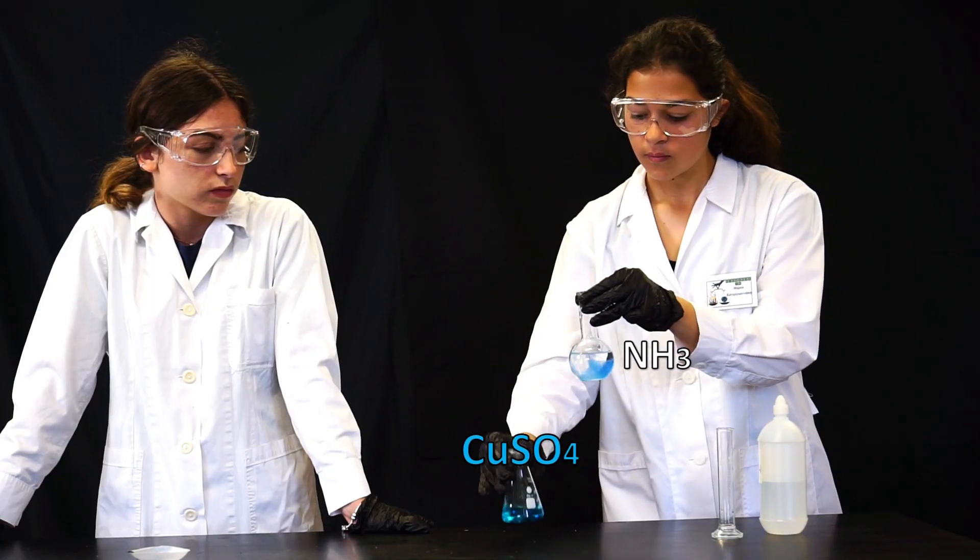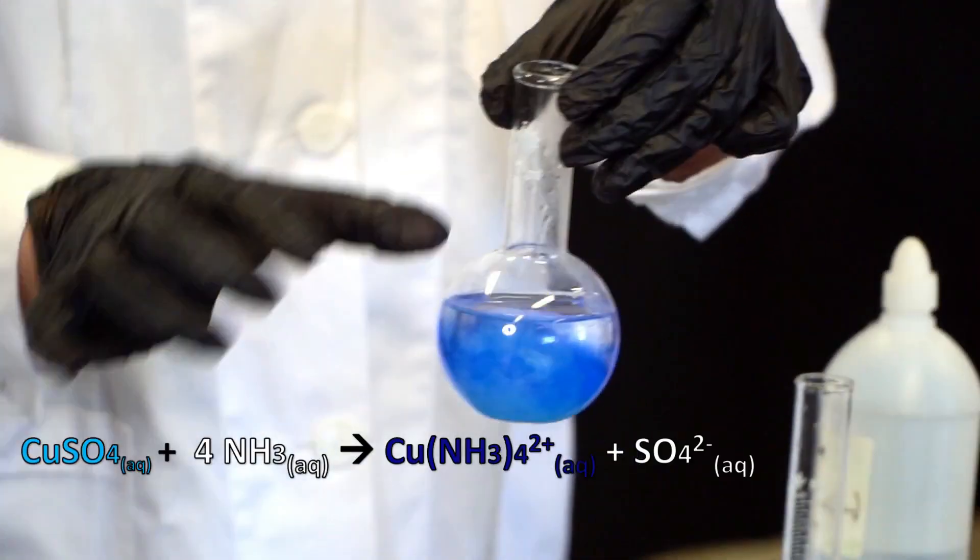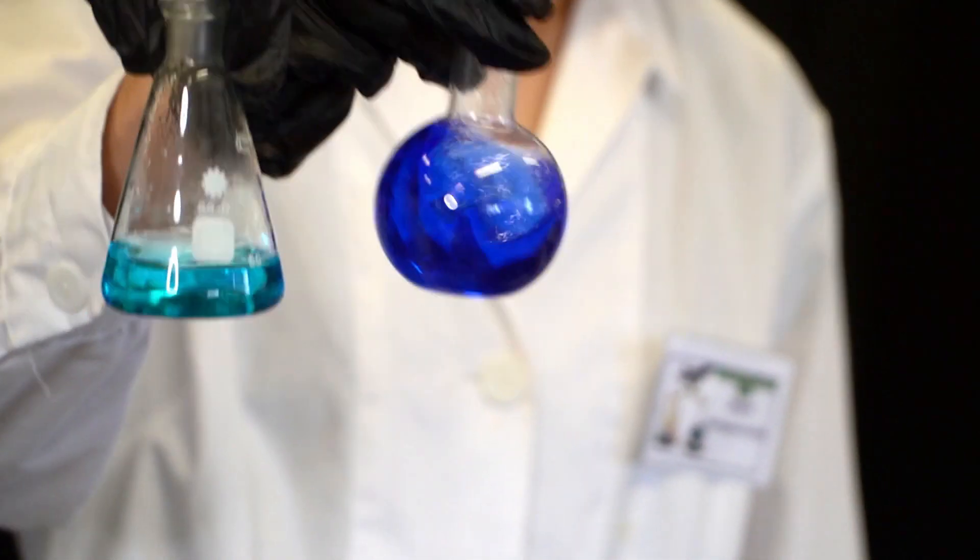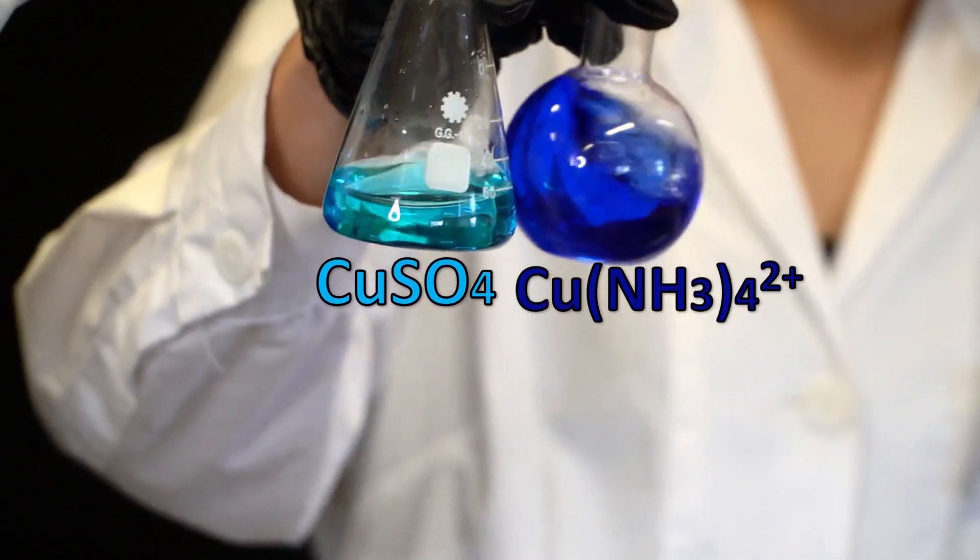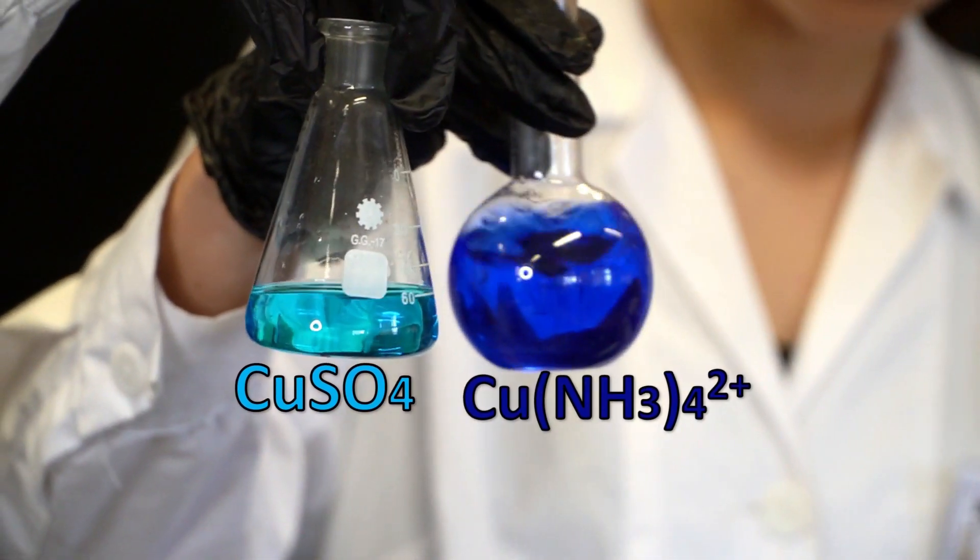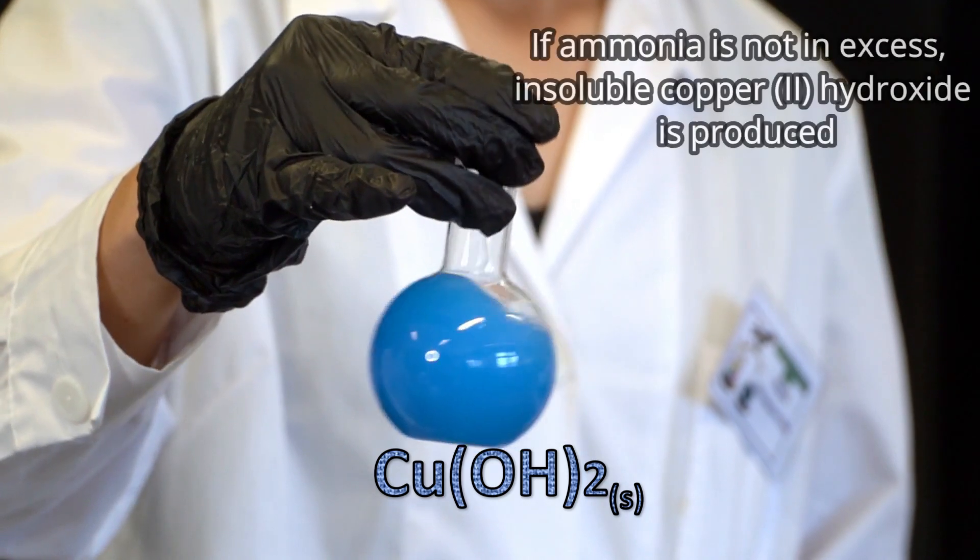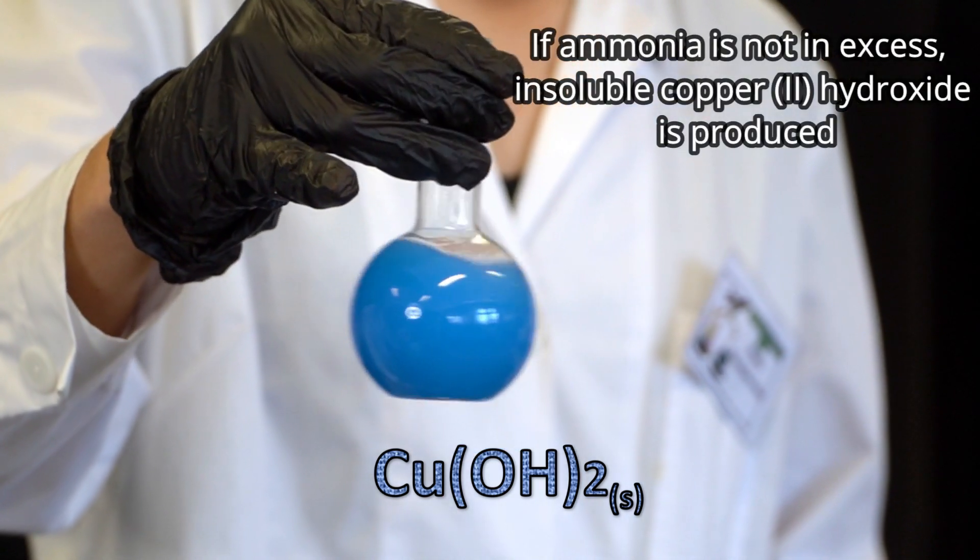When copper sulfate is added to an ammonia solution a bright blue complex of copper tetraamine is produced. However, if ammonia is not in excess a copper hydroxide precipitate is formed.